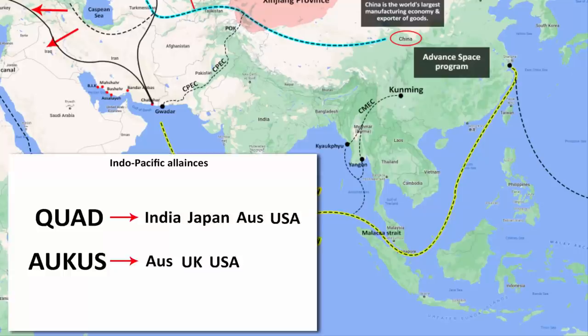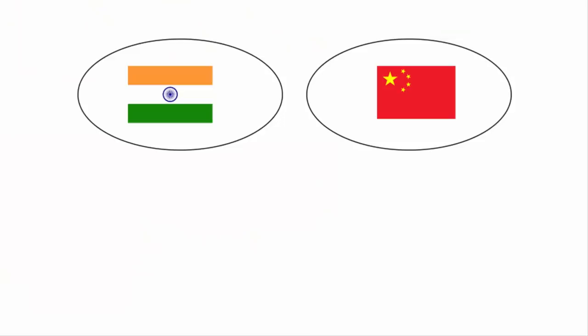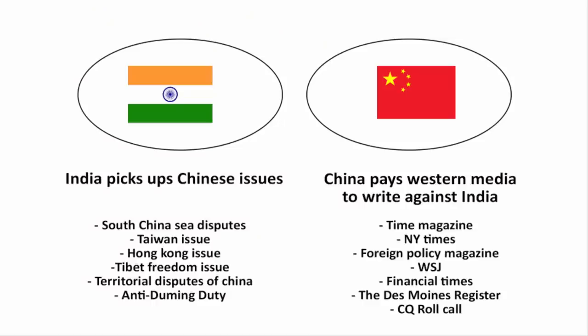Keeping all of this in mind, it is very much in India's interest to have the US, UK and France involved. As Chanakyaniti says, the activities of the enemy should always be monitored, and a powerful enemy can only be defeated together. This is where South China Sea disputes, the Taiwan issue, the Hong Kong issue, Tibet's freedom, and China's 17 territorial disputes with its neighbours on land and sea all have to come to the surface.